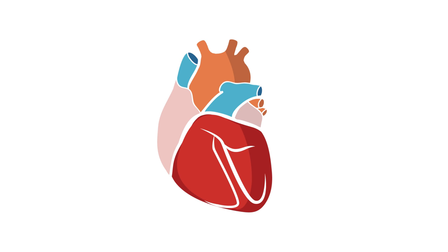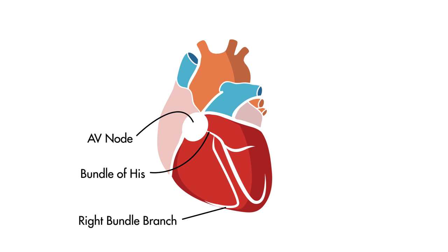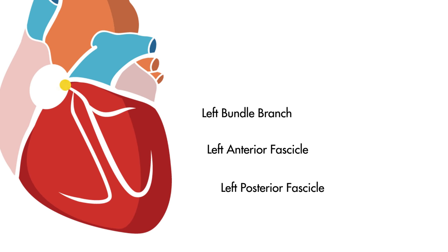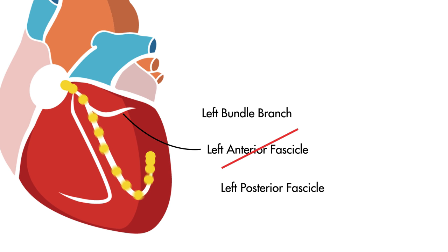Normally, electrical impulses travel from the AV node down the bundle of His and down to the left ventricle by way of the left bundle branch. The left bundle branch divides into the left anterior fascicle and the left posterior fascicle. In a left anterior fascicular block, electrical conduction is no longer able to travel down the left anterior fascicle, and so action potentials are only conducted by the left posterior fascicle.